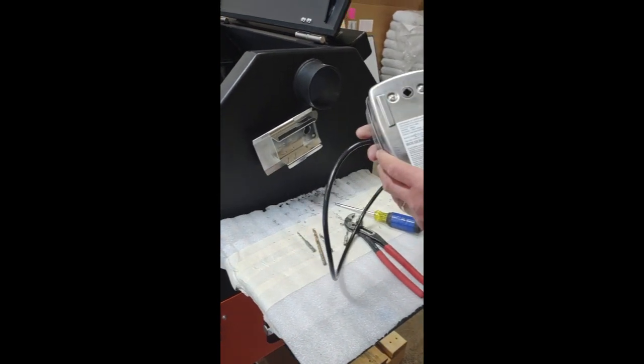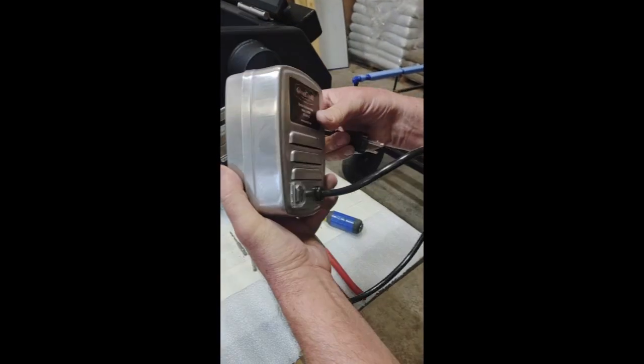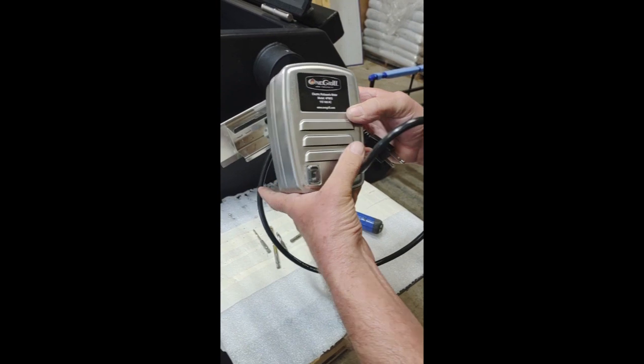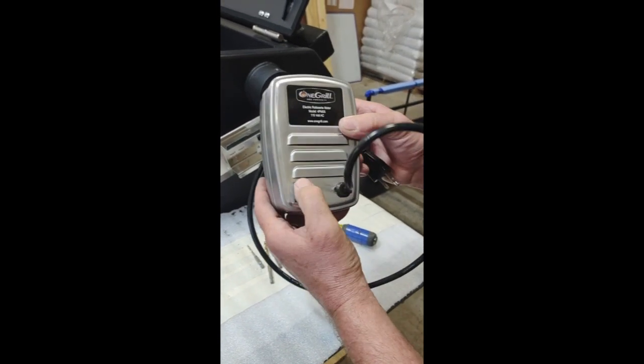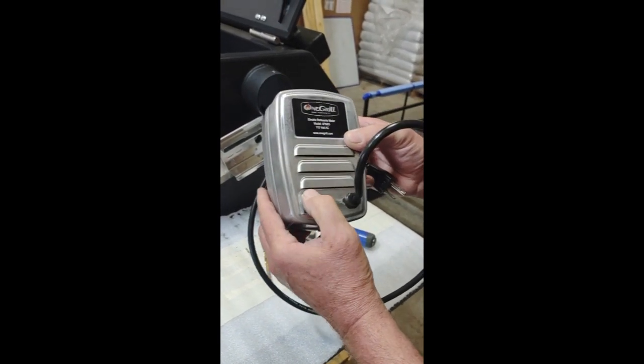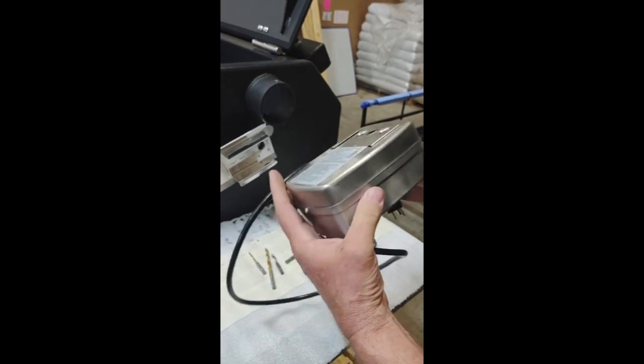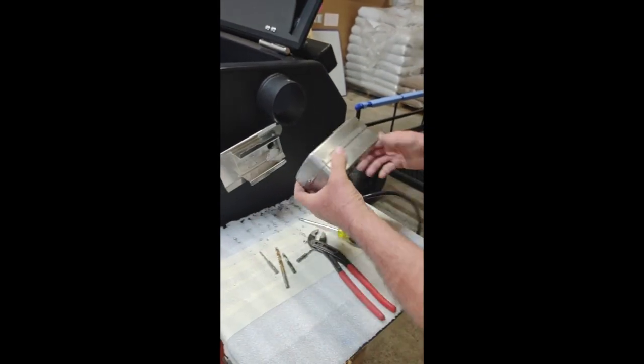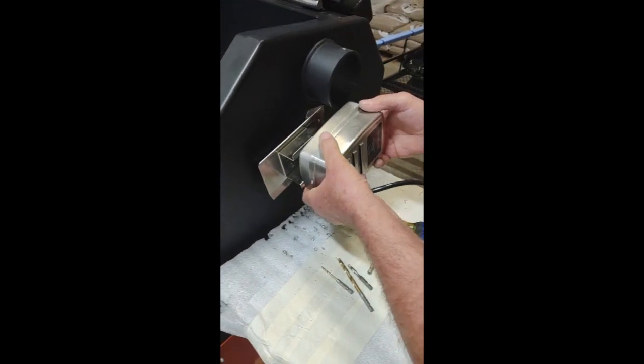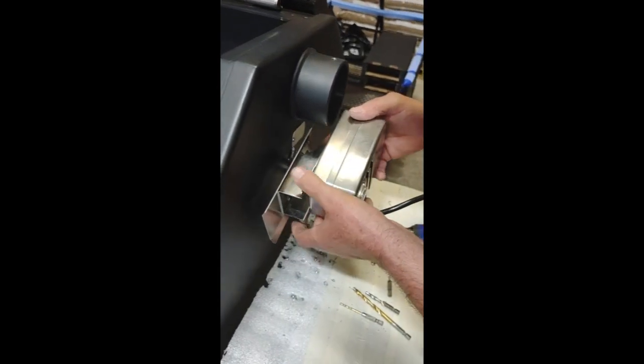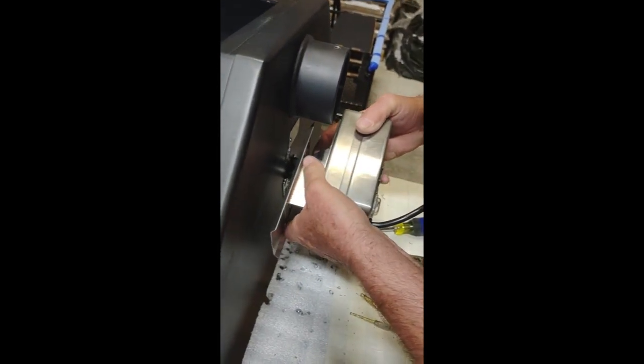And you can see this is a heavy rotisserie motor. Got a waterproof switch there, watertight. All you gotta do now, slide that on. I think it's this direction.